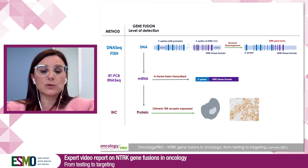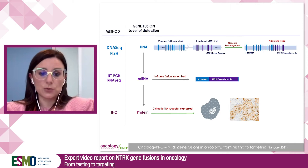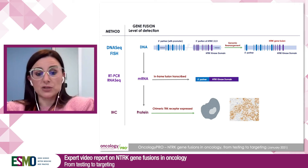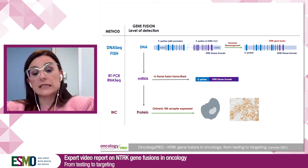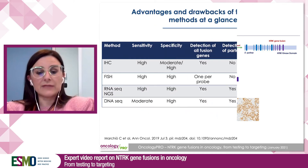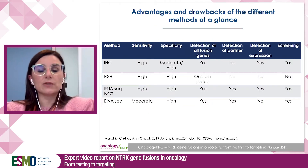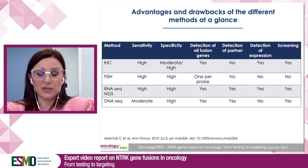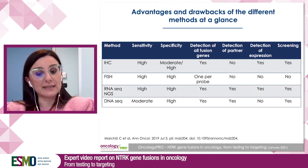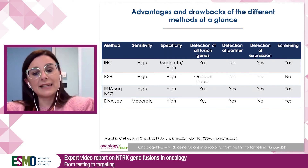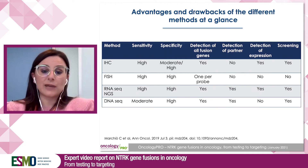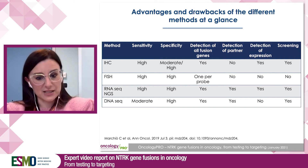On the other side, we could also use an in situ approach — either immunohistochemistry, when we have the possibility to use pan-NTRK antibodies, or fluorescence in situ hybridization (FISH). With FISH, we are looking at gene fusion at the DNA level, so we have the same issues related to detecting only the genetic rearrangement. In addition, with FISH, given that we have three genes to screen, we would have to run three different experiments.